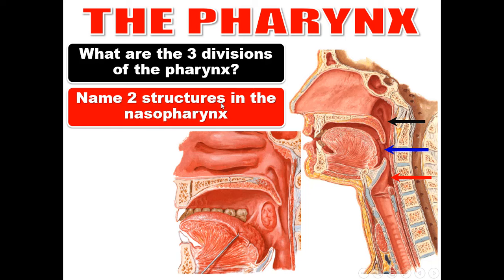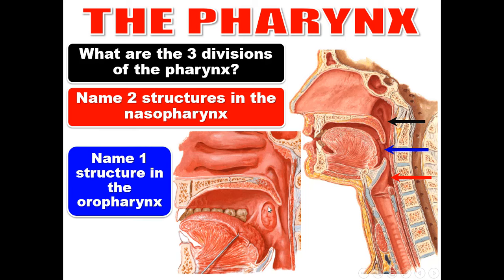Name two structures in the nasopharynx. This lymphoid tissue is called the adenoid or pharyngeal tonsil, and this opening is the opening of the Eustachian tube or auditory tube. Name one structure in the oropharynx — it is the palatine tonsil, located in the oropharynx.